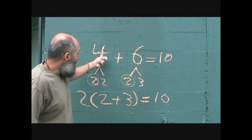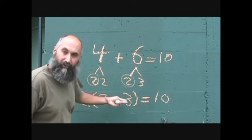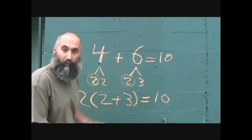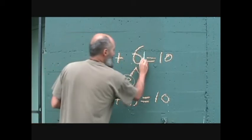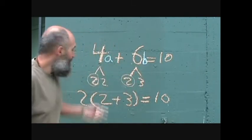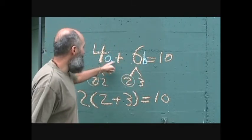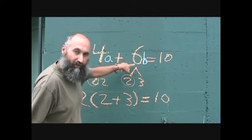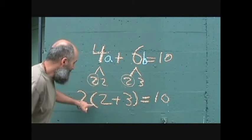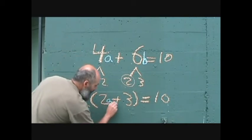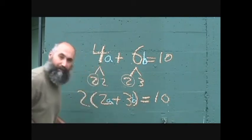Now, obviously, we wouldn't bother doing this with something this simple. But what would happen if you had, for example, let's say an A here and a B here. Now, you couldn't just simply go 4A plus 6B. You can't add those. So what you would do is take out the 2 from both of them, and this would be 2 times, parentheses, 2A plus 3B.